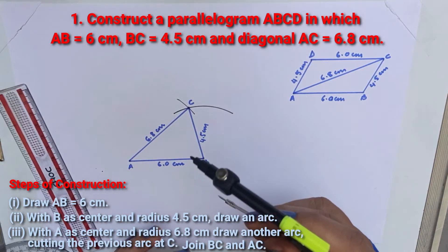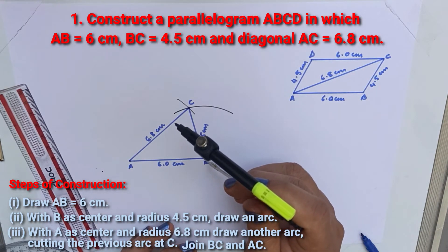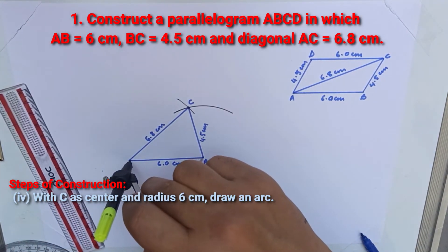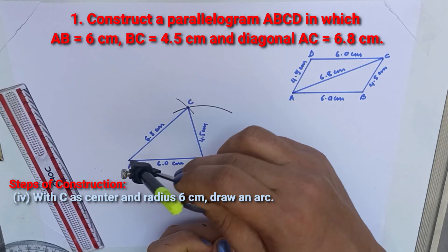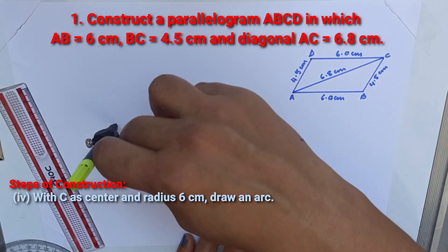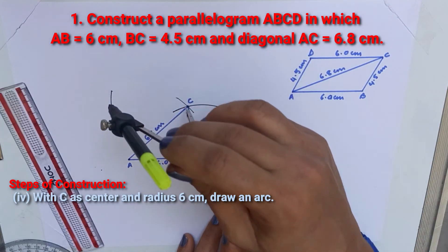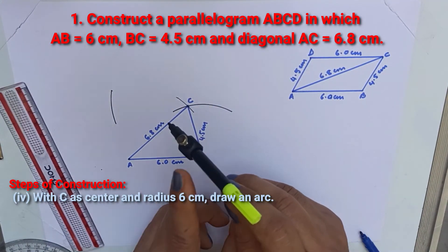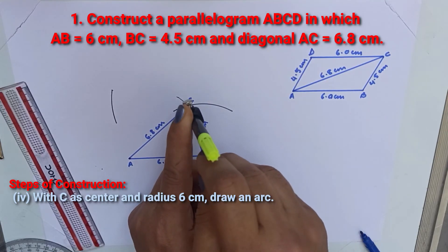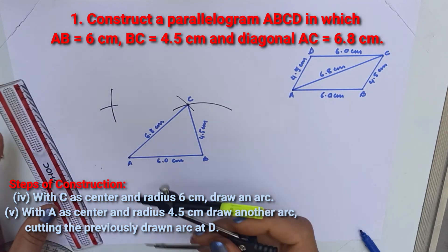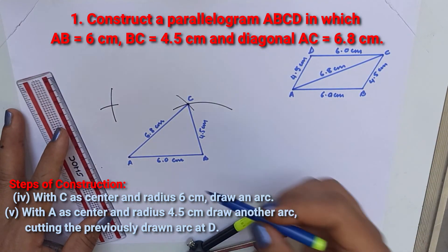Since this is a parallelogram, opposite sides are equal. Open the compass equal to AB that is 6 cm with C as center, draw an arc and AD is equal to BC. Open the compass equal to BC with A as center, draw another arc cutting previously drawn arc.